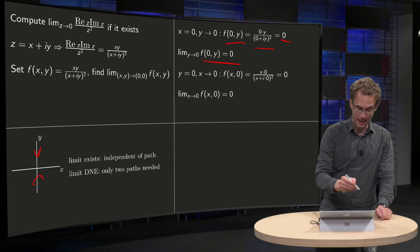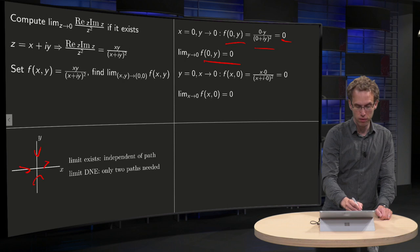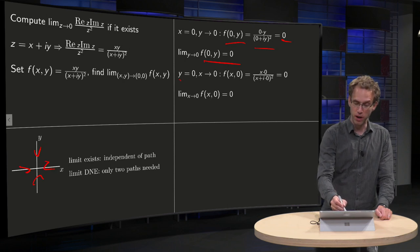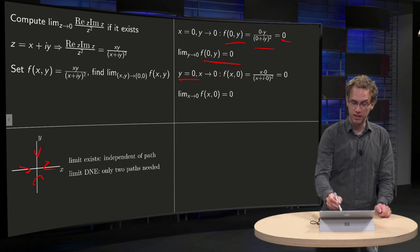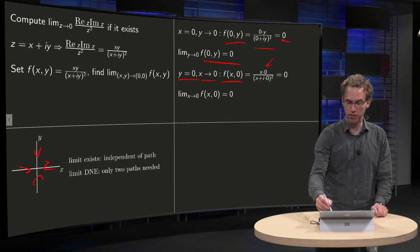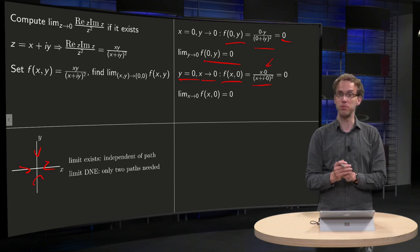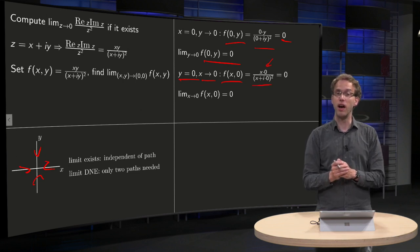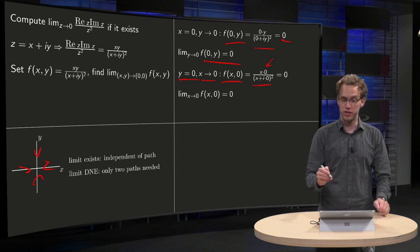Then we can go along the x-axis from both directions, so we put y to 0 and then we take the limit x to 0. So first we plug in y equals 0 in our f and then we find x times 0 over here and x plus i times 0 squared over here in the denominator. So we get 0 for all values of x.